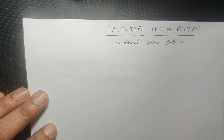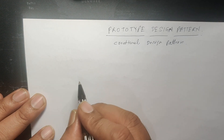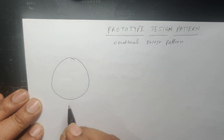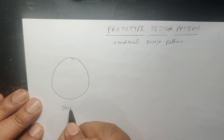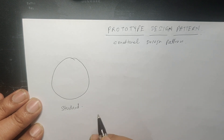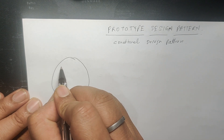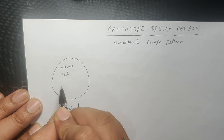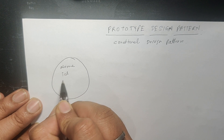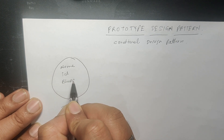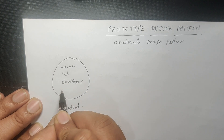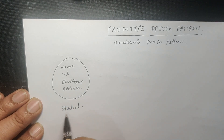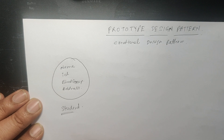Let me explain this using a simple example. Suppose I have a Student object which has four data members: one is name, the second one is ID, the third one is blood group, and the fourth one is address.